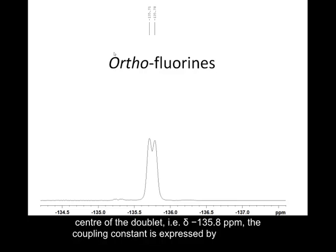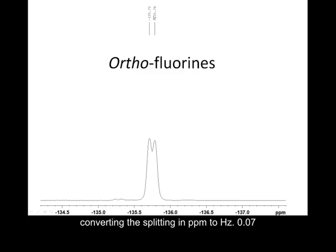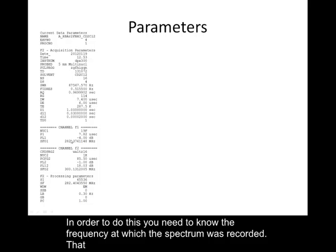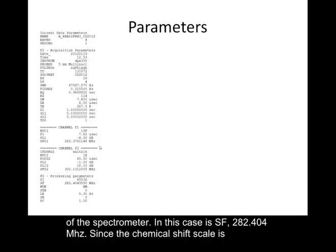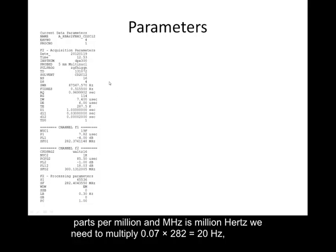In order to work out what the coupling constant of that doublet is, we need to do a conversion. We take the difference in chemical shift — which is 0.07 ppm — and multiply it by the frequency at which the spectrum was recorded, which is 282.4 MHz. Since the chemical shift scale is in parts per million and the frequency is in megahertz, we multiply 0.07 by 282 to get a value of 20 Hz. So the coupling constant for that doublet is 20 Hz.